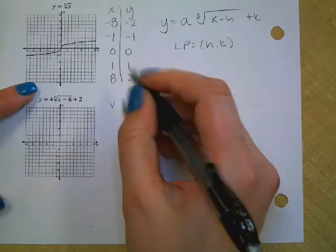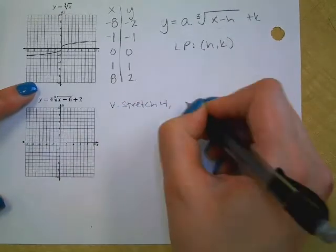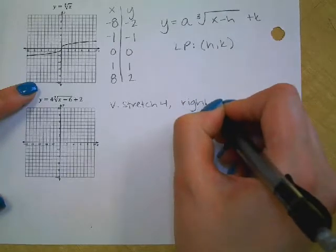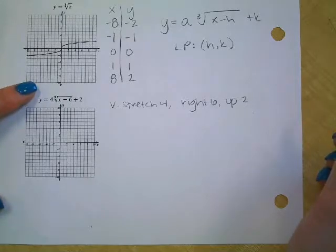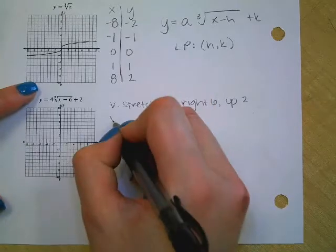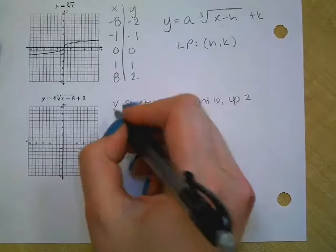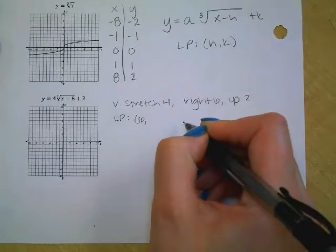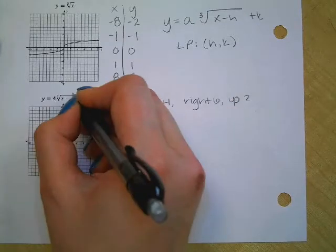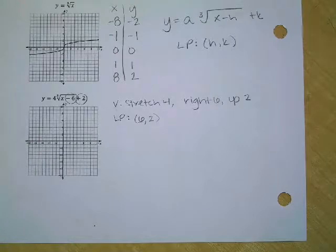We've got vertical stretch of 4. I heard right, right 6. And then up 2. And then what's the vertex? Not the vertex, locator point. Locator point is 6, 2. And that comes from right in here. We got 6, 2.